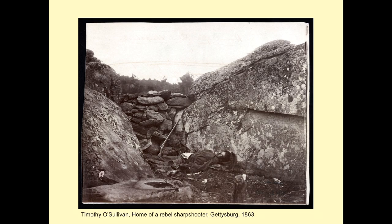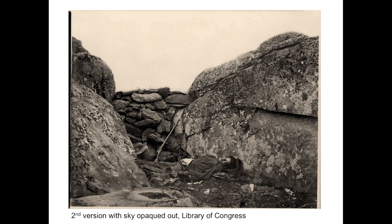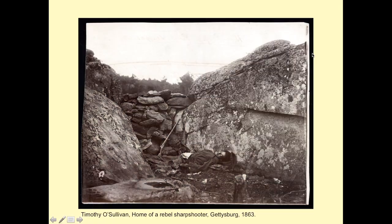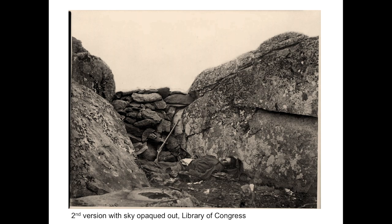One of O'Sullivan's most famous photographs is 'Home of a Rebel Sharpshooter,' and it remains a controversy today. In one version, owned by the Library of Congress, you can see the sky has been opaqued out as well as some of the background — a common practice in combination printing where you could print in skies separately. Whether this was done on the original negative or a second negative isn't certain, but it would be possible on a second negative to use opaque paint with the intent of later printing in a more suitable sky.